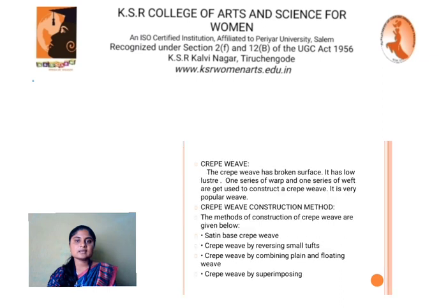Crepe weave. The crepe weave has a broken surface and low lustre. One series of warp and one series of weft are used to construct a crepe weave. It is a very popular weave. Construction methods of crepe weave include: satin based crepe weave, crepe weave by reversing small twills, and crepe weave by combining plain and floating weave.